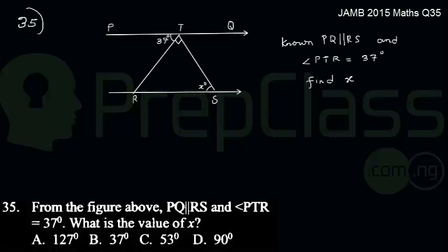Question 35 says from the figure above, we have PQ is parallel to RS and angle PTR equals 37 degrees. The question says find x.